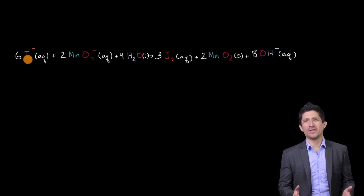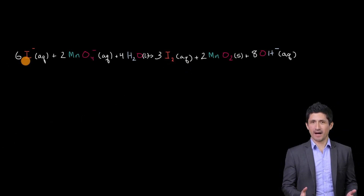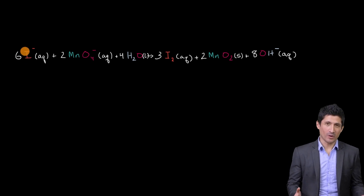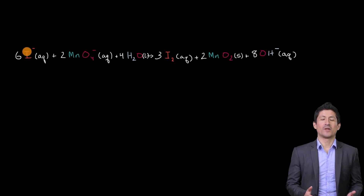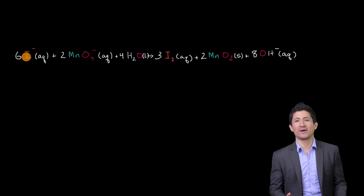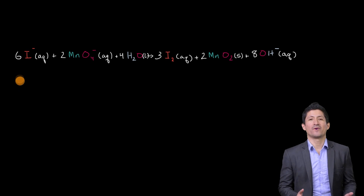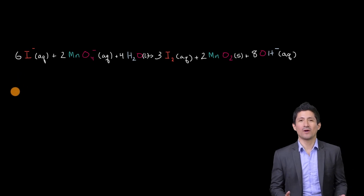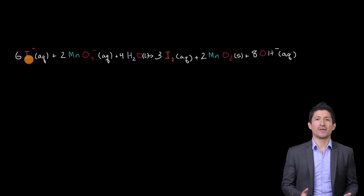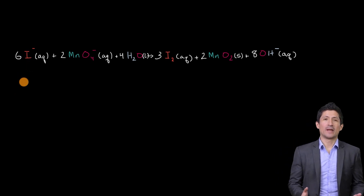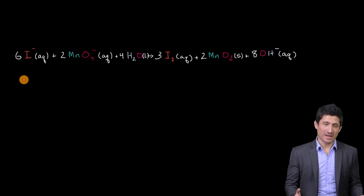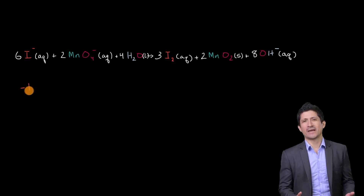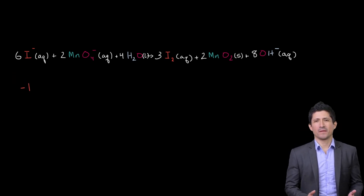So first, let's look at this iodine right over here. Each iodine has a negative one charge, and so its hypothetical charge — which isn't so hypothetical in this case — which would be its oxidation number, is negative one.